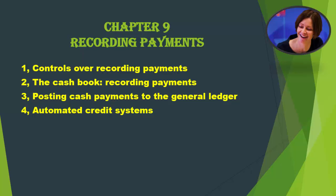Chapter 9: Recording Payments. Topics include: Controls Over Recording Payments; The Cash Book — Recording Payments; Posting Cash Payments to the General Ledger; and Automated Credit Systems.